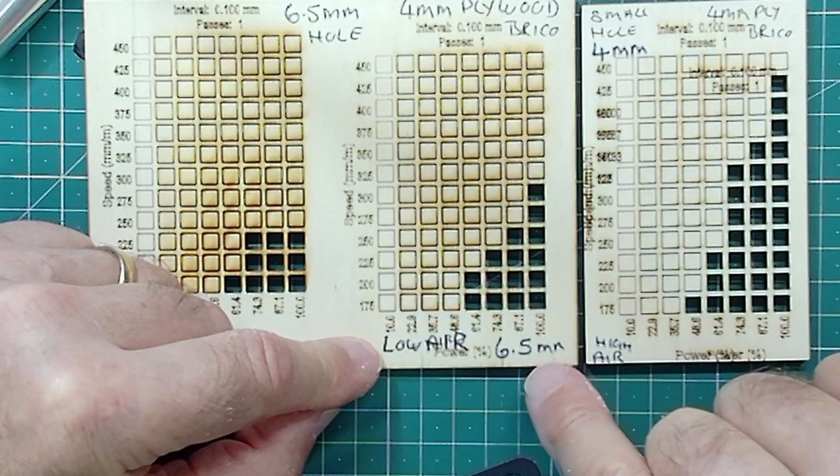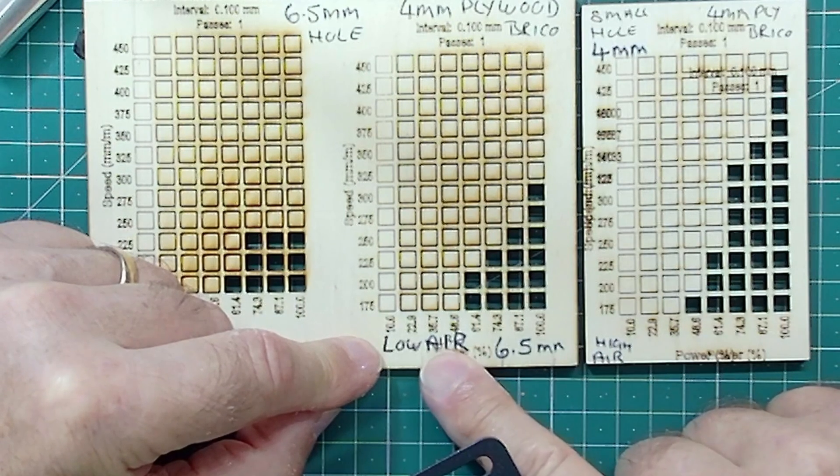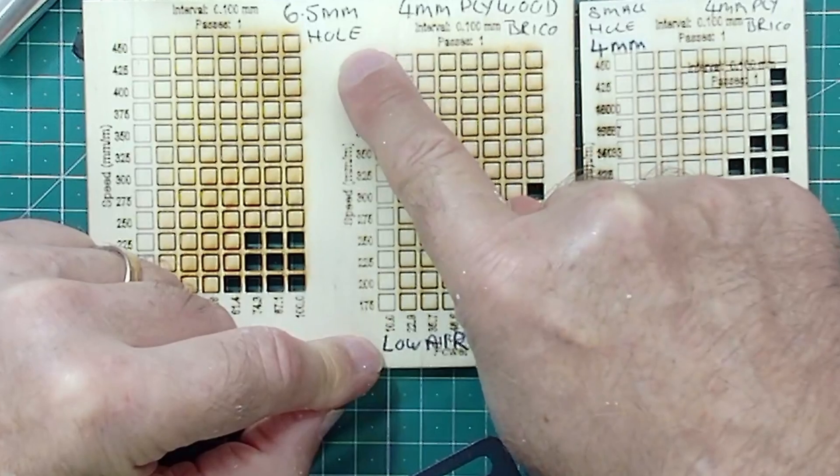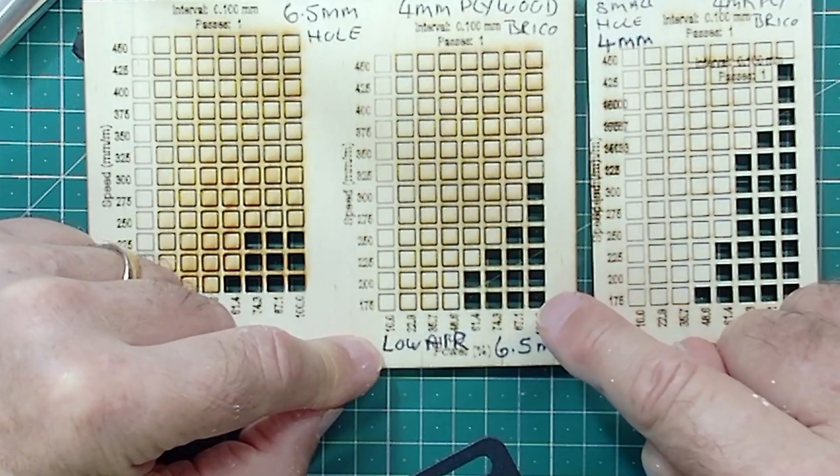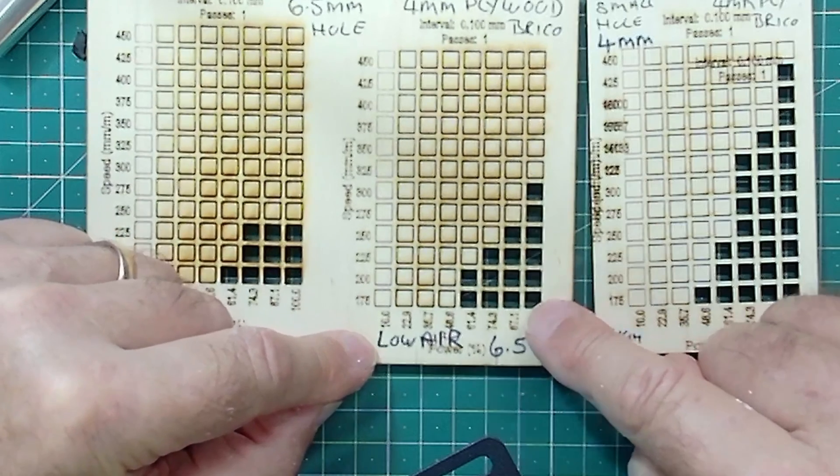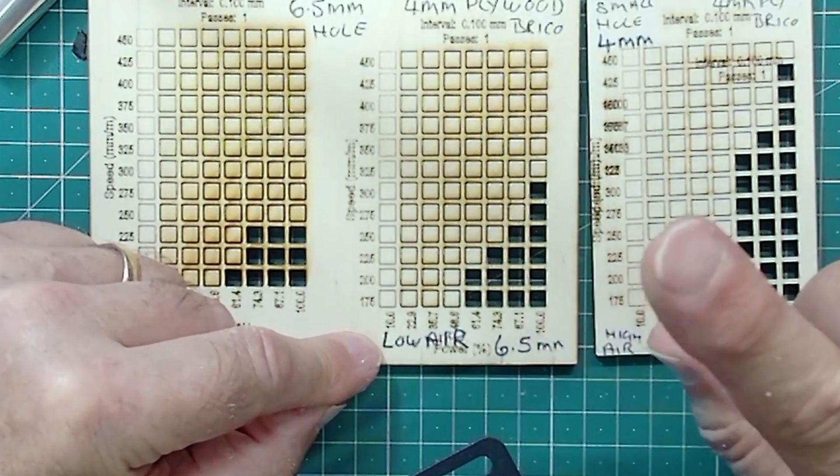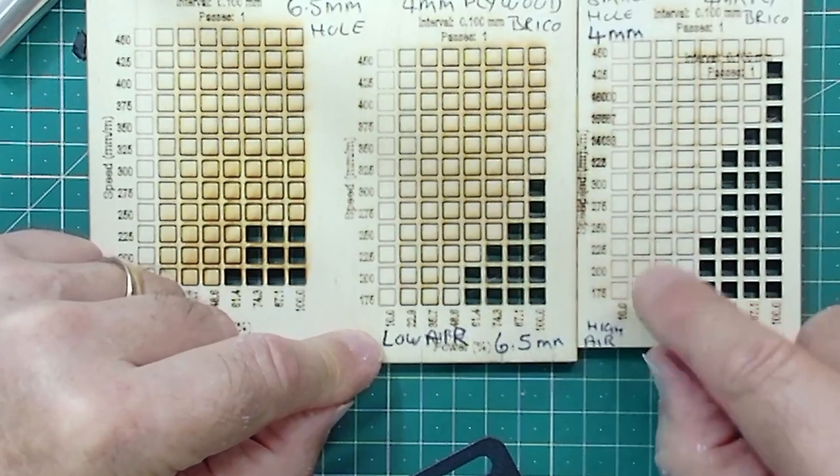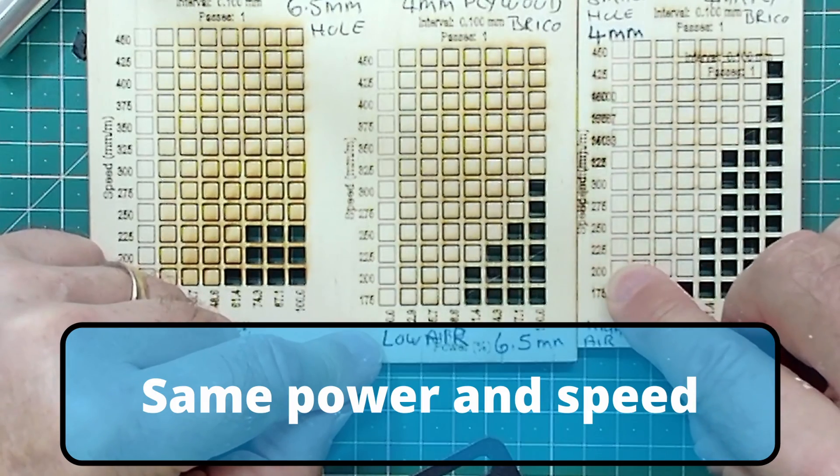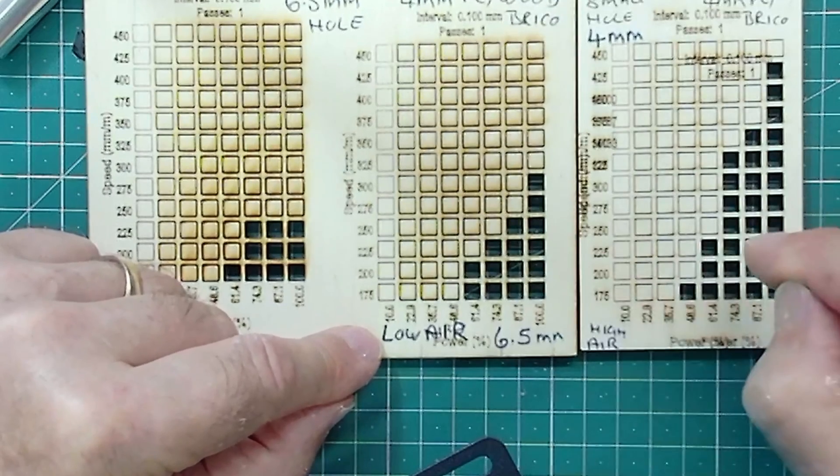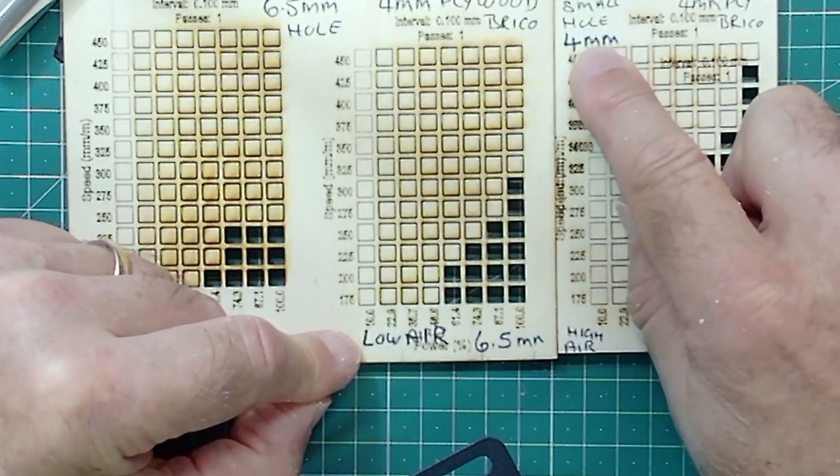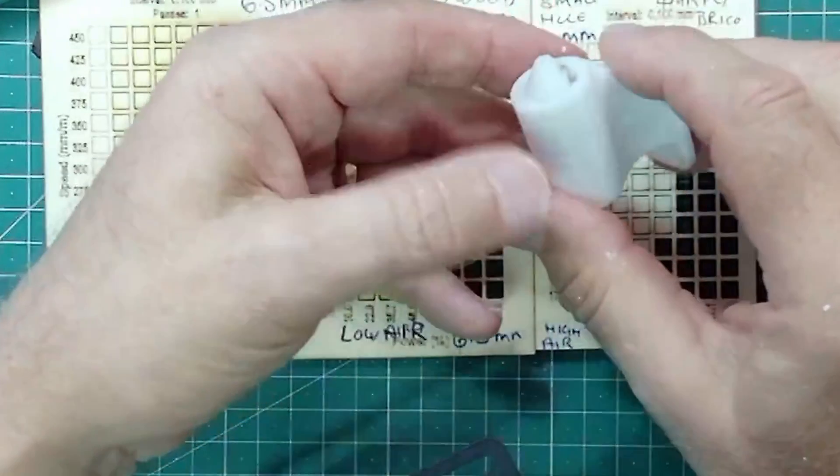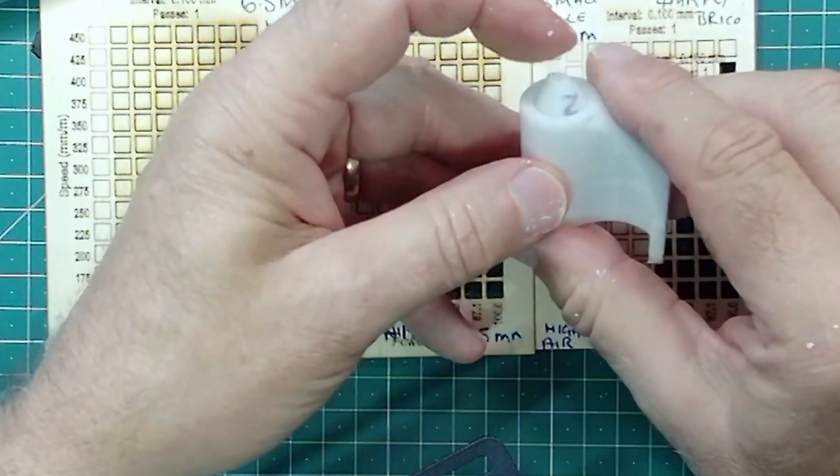Ignore this low air label - what I mean by low air is I was using the 6.5mm hole, giving me lower air pressure coming out. I wasn't changing the pump. Ignore these numbers here because I messed up, but it's the same cutting power. This was a 4mm hole, this is 6.5mm, and this is 4mm. You can see the massive difference it's made with air assist.